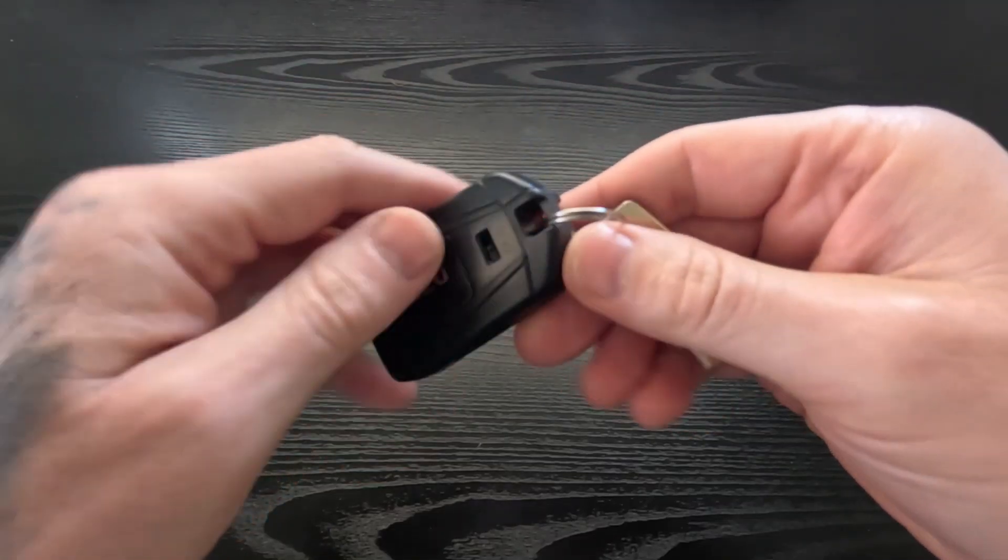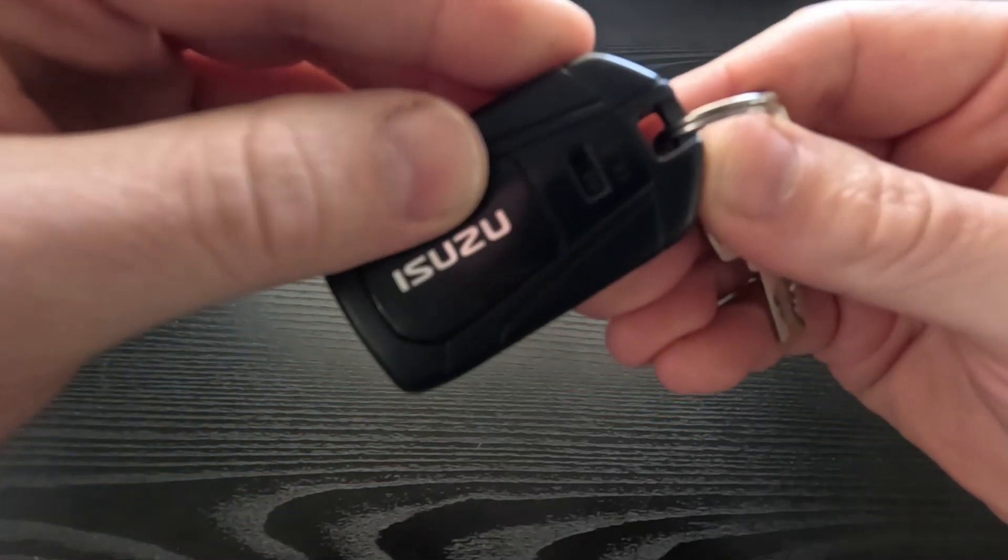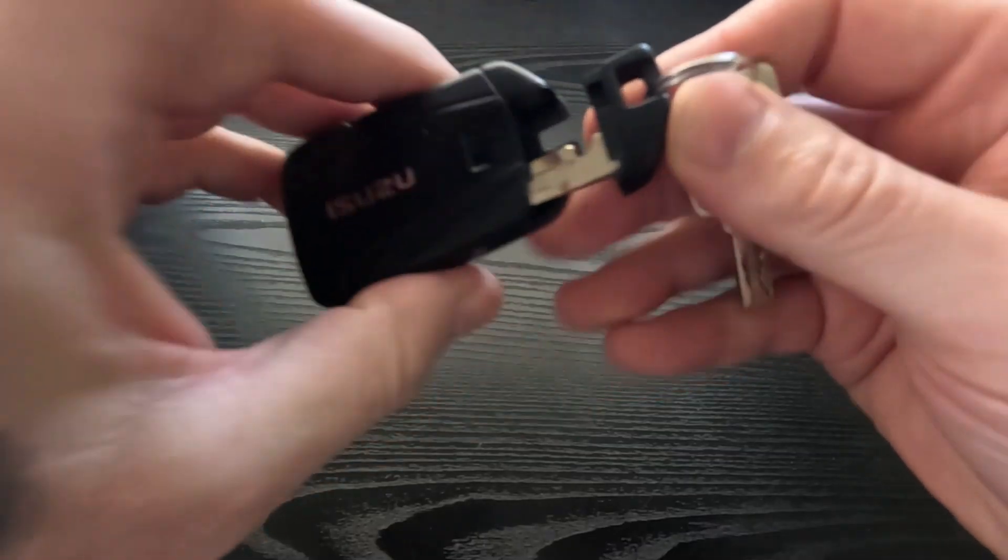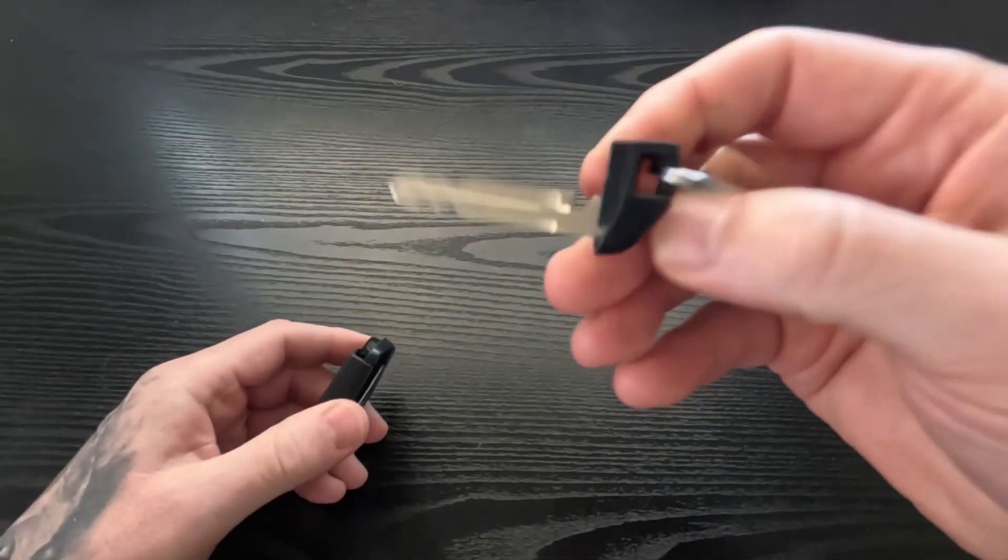The battery's flat, you can't open the door. You slide that up, there's a little slider there, slide it up, pull that out. There's your mechanical key so you can get into the car.